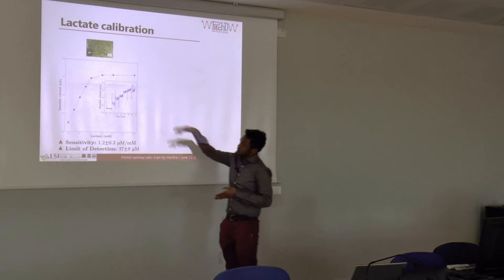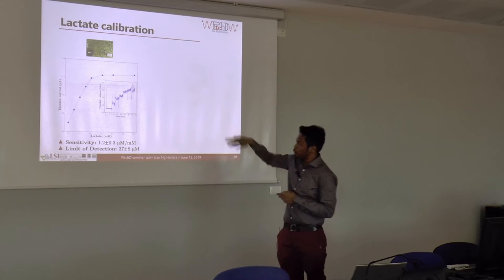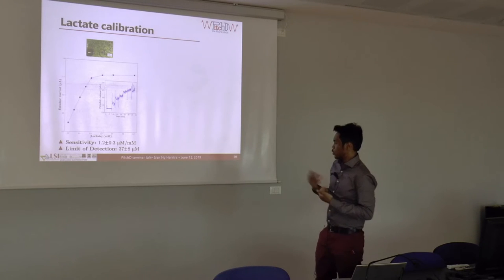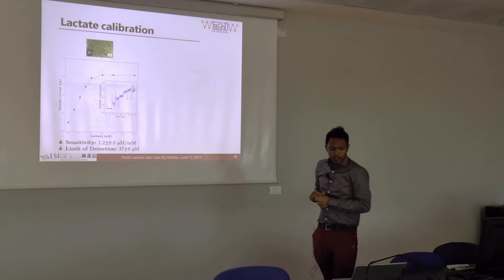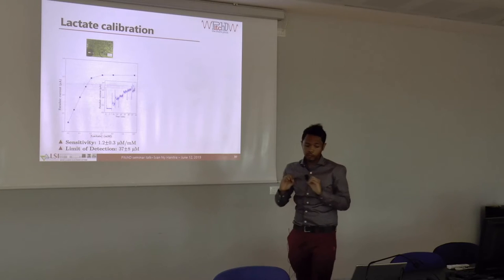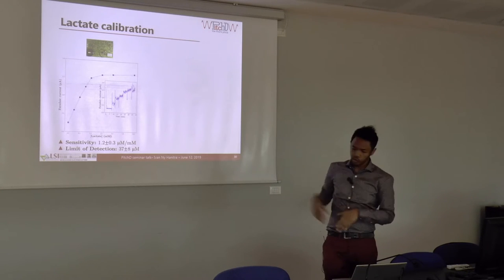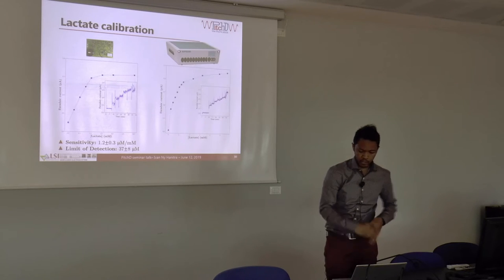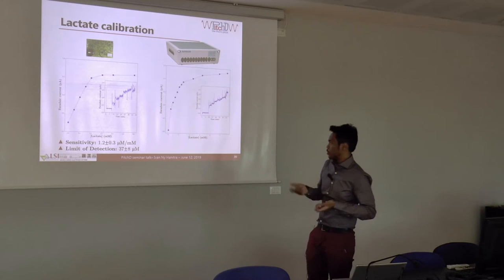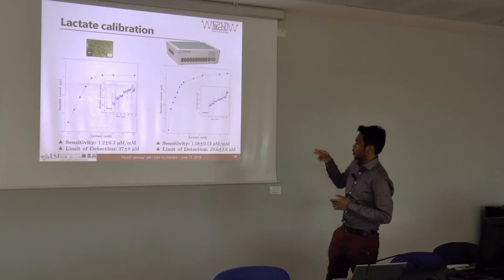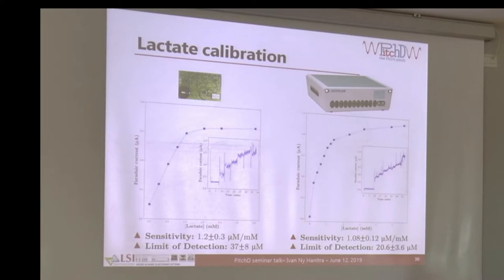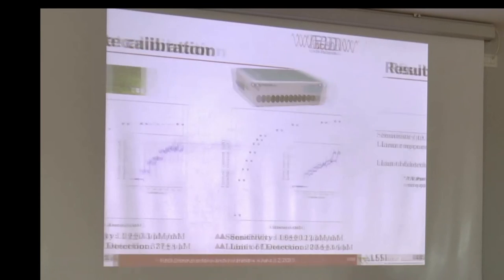Key figures of merit are sensitivity — the slope of the calibration curve at approximately 1 µA/mM — and the limit of detection, which is the minimum amount of lactate the system can measure. This is well below the typical physiological lactate concentration found in sweat, blood, or serum. For comparison, measurements with a commercial electrochemical lab tool (Autolab) show a slightly lower limit of detection due to lower background noise, but essentially the same sensitivity as our developed system.